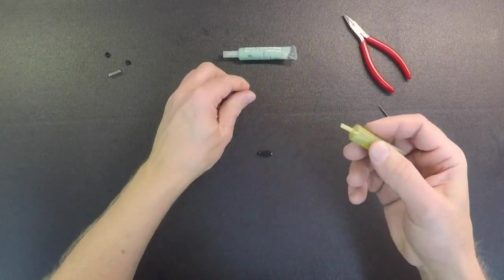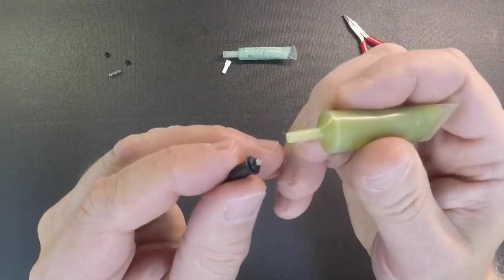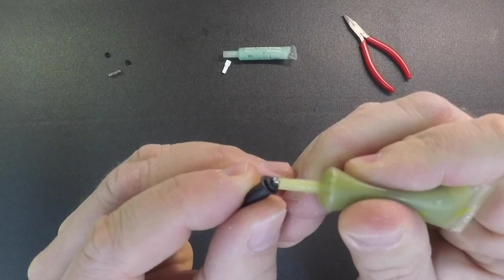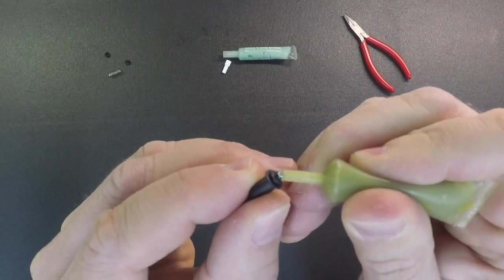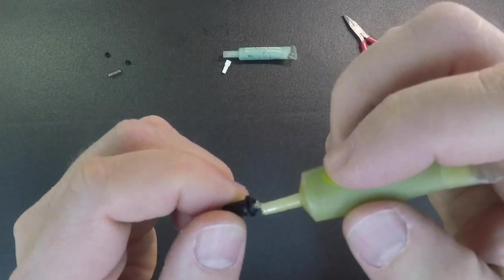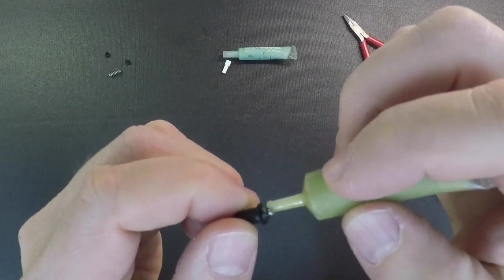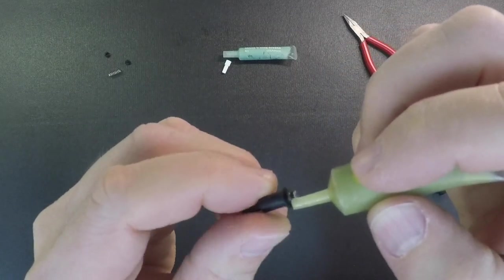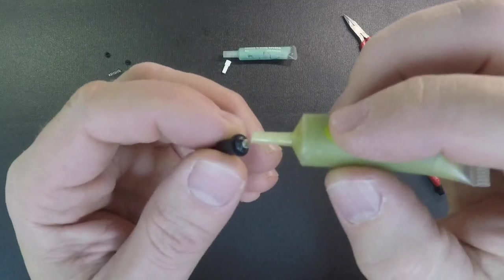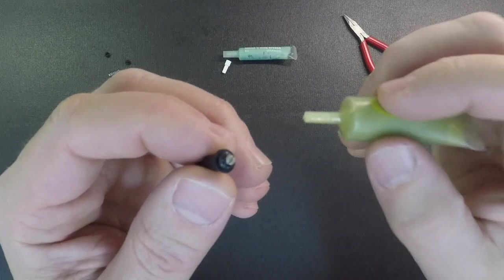To put the lube on, just squeeze a very small amount out of the tube until it gets on the O-ring. Then just take the tip of the dispenser and rotate it around the O-ring. Make sure you cover all the O-ring and get it nice and lubed up. It actually helps getting a little bit on the shock body too.